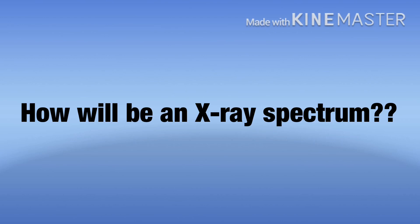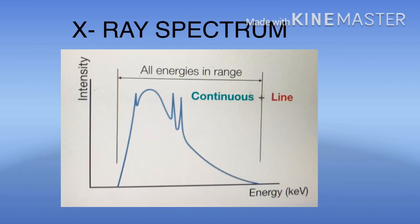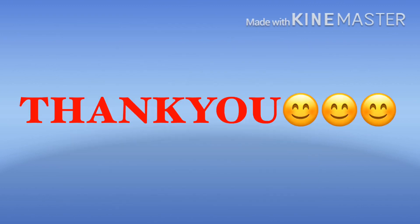So finally, I conclude: How will an X-ray spectrum look? An X-ray spectrum is continuous with the line spectrum superimposed on it. Students, now in this class, I have covered this topic. If you have any doubts, please leave your comments in the comments box. So definitely I will answer you. If you have any questions, please like this video.